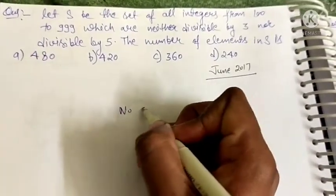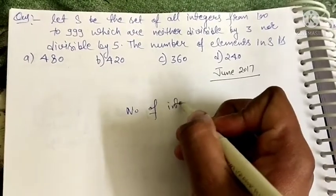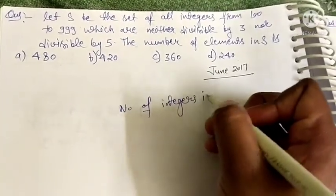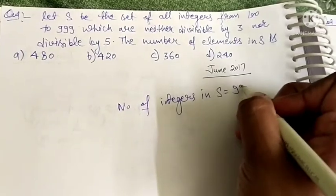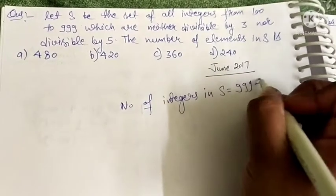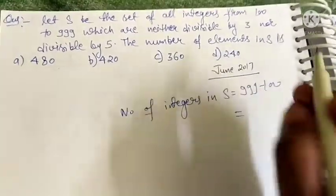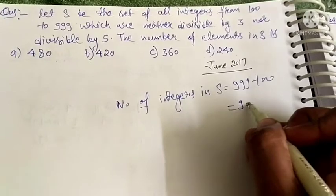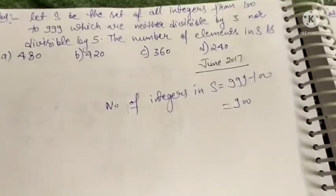First, we will find the total number of integers. This is 999 minus 100 plus 1, which means there are 900 integers in total.